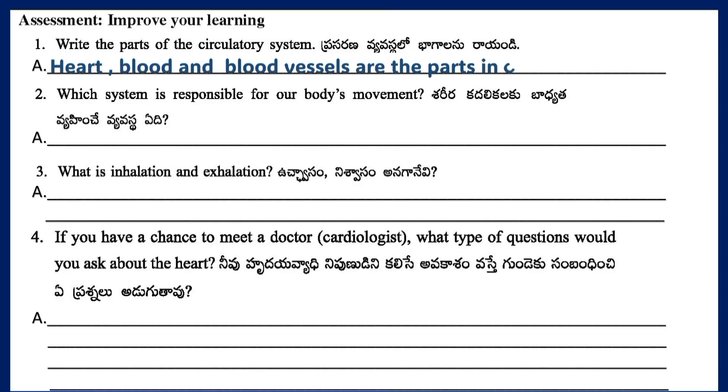Answer: Heart, blood, and blood vessels are the parts of the circulatory system.